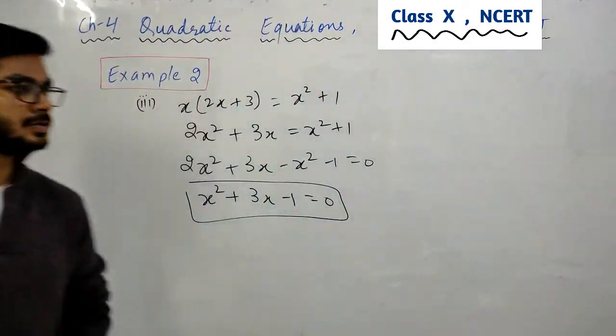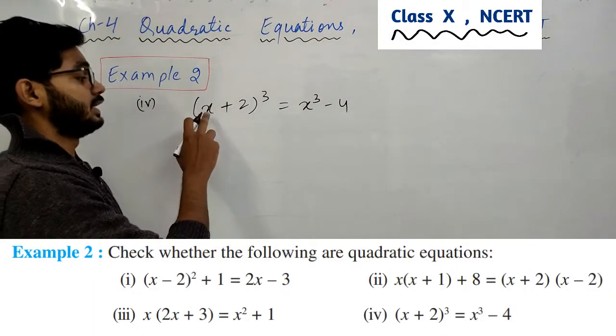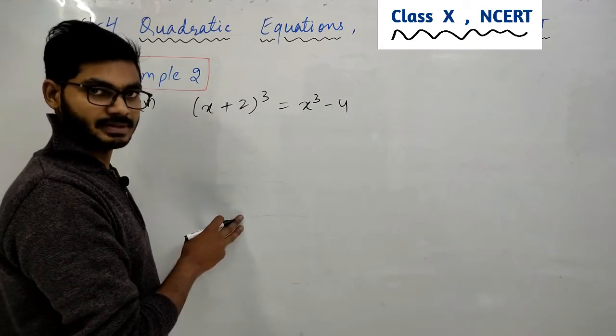तो आप देख सकते हैं x² है इसका मतलब ये quadratic equation भी है. ये note कीजिए देखते हैं अपना fourth part. आईए बात करते हैं fourth part की. आपके सामने लिखा हुआ है यहाँ पर देखिए (a+2)³ = x³ - 4.